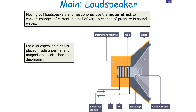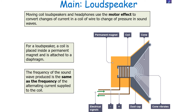For a loudspeaker, a coil is placed inside a permanent magnet and attached to a diaphragm. The frequency of the sound wave produced is the same as the frequency of the alternating current supplied to the coil.